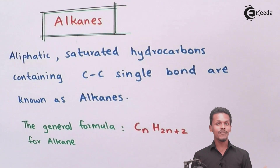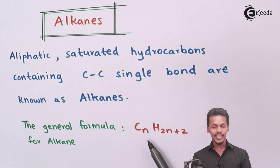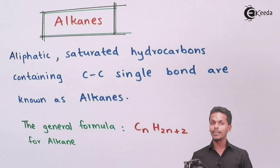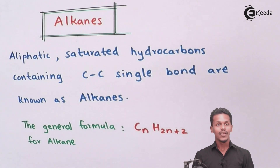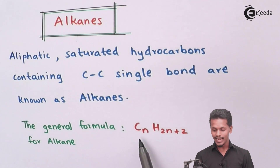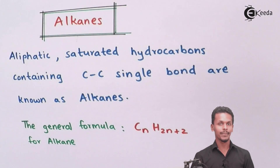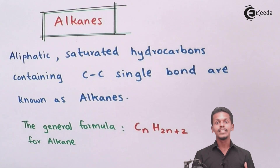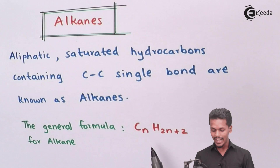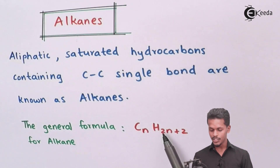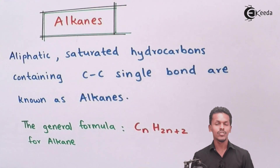The general formula of alkane is CnH2n+2, where n represents the number of carbon atoms, and the number of hydrogen atoms is therefore 2n+2.